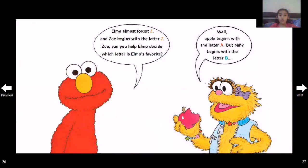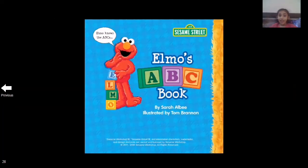Elmo almost forgot Z! And Zoe begins with Z. Zoe, can you help Elmo decide which letter is Elmo's favorite? Well, apple begins with A, but baby begins with letter B... The end.